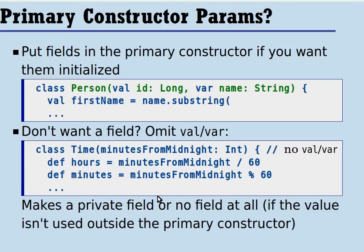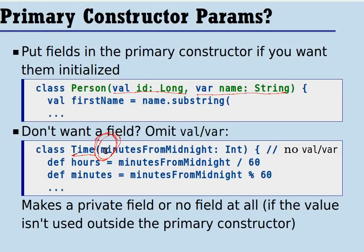Next, let's look at the primary constructor. There's always a question of what to put in it. A good default is to put field definitions right in the constructor and let it initialize those fields. Sometimes, however, you're constructing an object from something you don't want to be a field. In the time class, the constructor takes minutes from midnight, which we don't want as a public field. In that case, omit val or var — no field is generated; it's just a regular construction parameter. You can use that value in field initialization or in methods, as with the computed hours and minutes values.